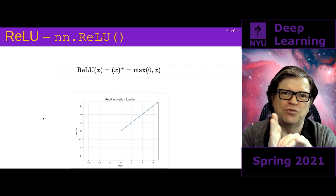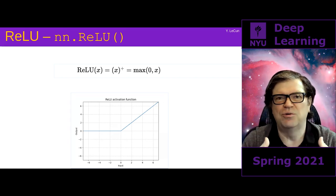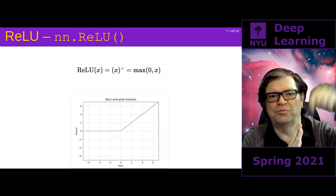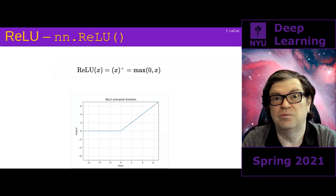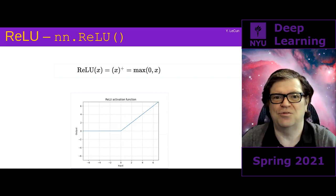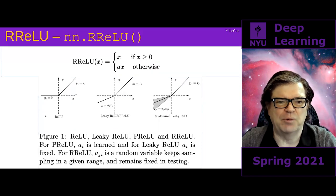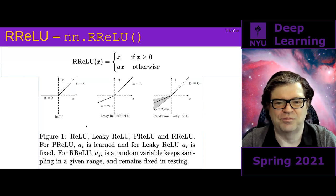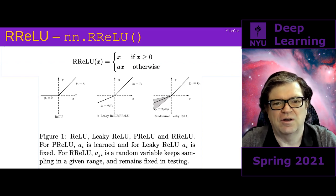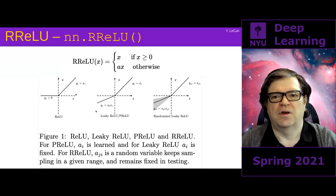One issue with the ReLU is that when you're in the flat part there is no gradient being backpropagated through that nonlinearity. If the value coming into a ReLU is negative, backpropagating through it will produce zero gradient — it's flat, so you can change the input without making any difference to the output. That can sometimes be a problem, which is why people came up with the Leaky ReLU and PReLU.